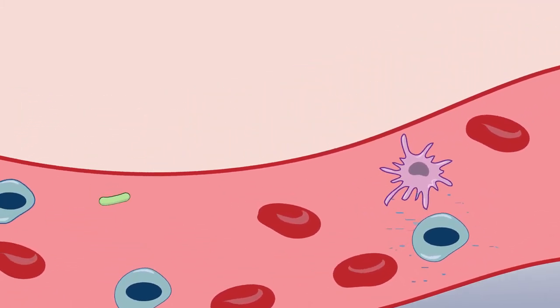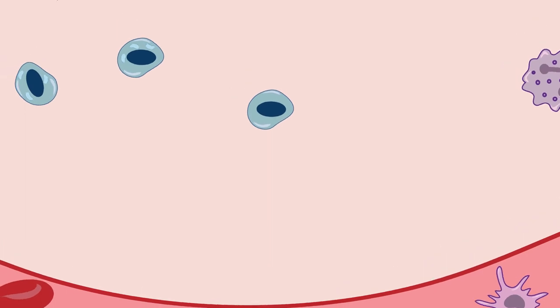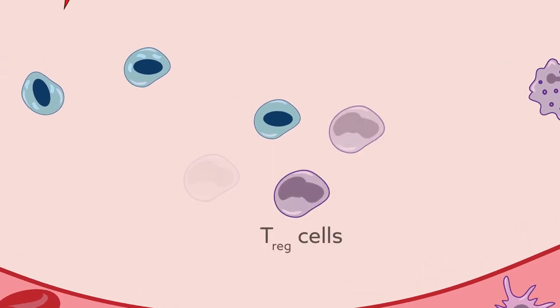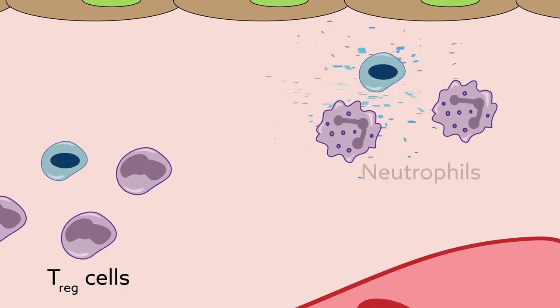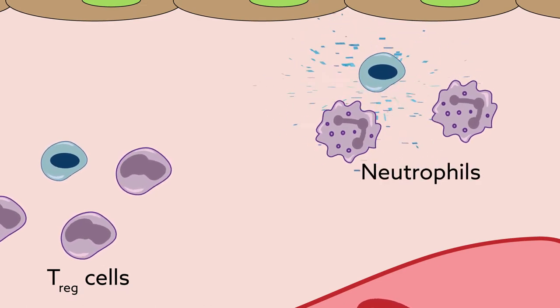At the same time, stem cells keep the immune response in check by promoting T regulatory cells and producing the right mix of cytokines and chemokines to keep neutrophils from spreading into healthy tissues.